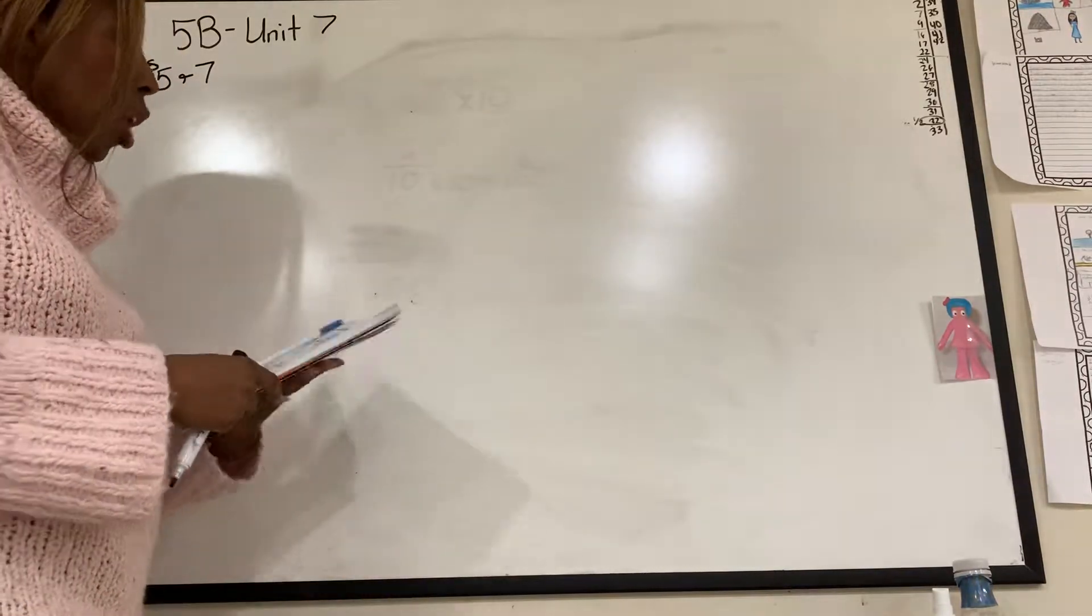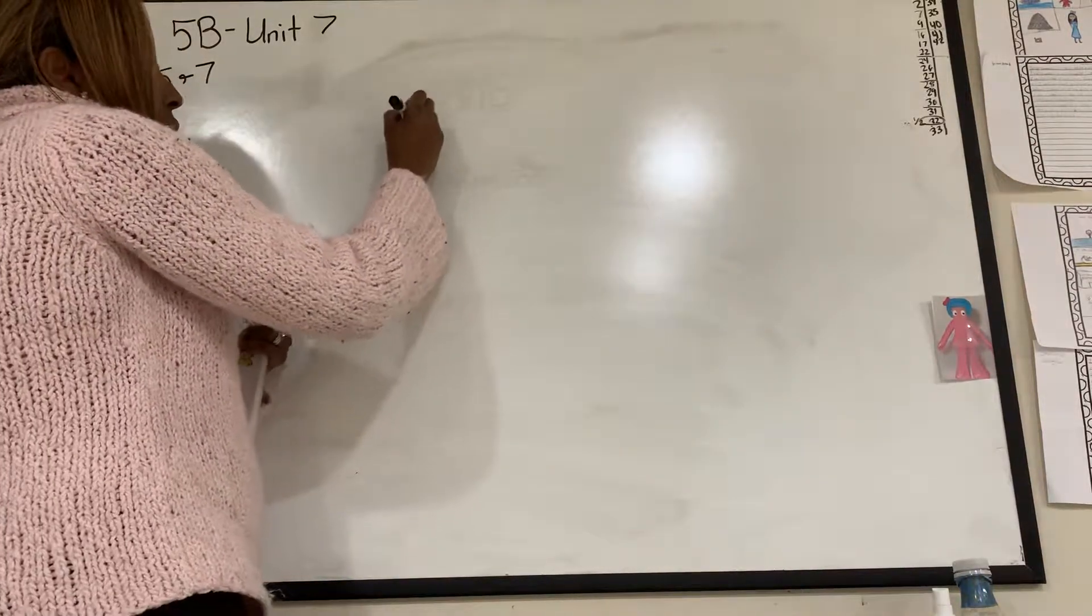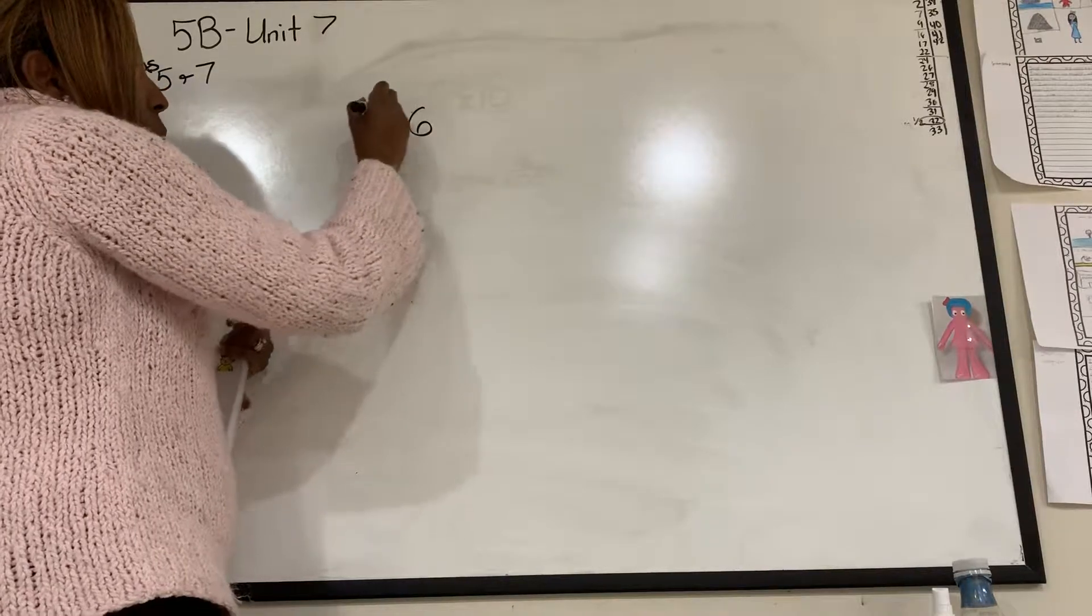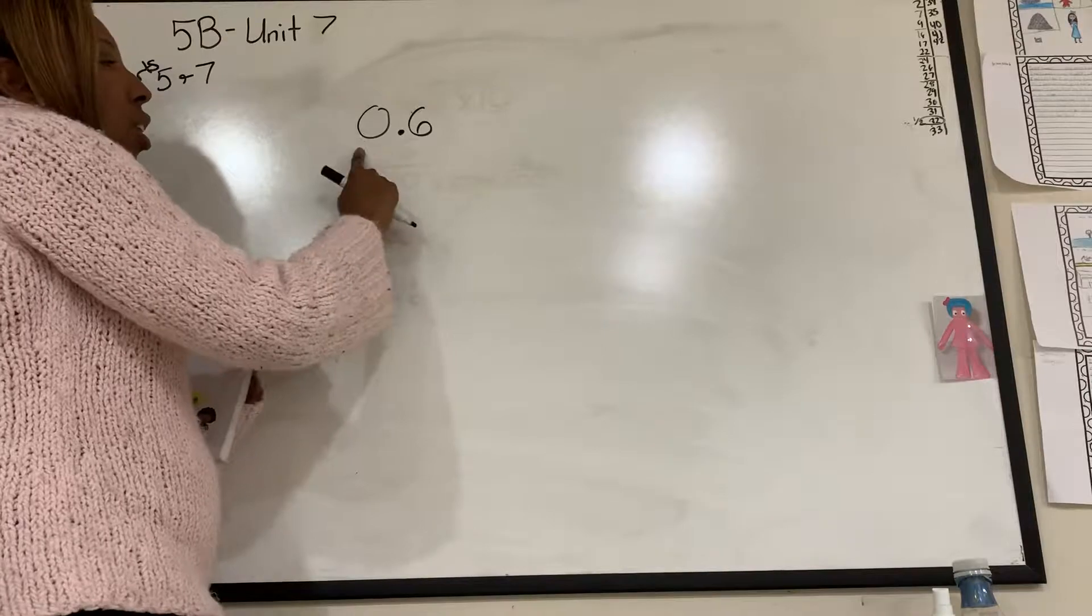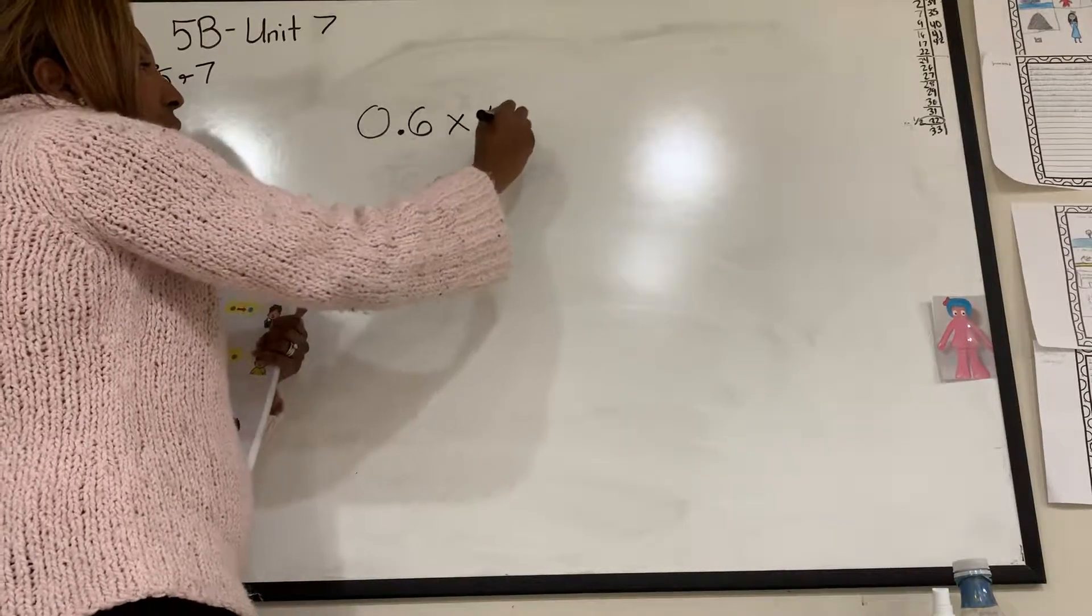So we're going to start with point 6. I'm going to go like that. So that's 6 tenths. Now, what they're going to do is they're going to say we're going to give you times 10.